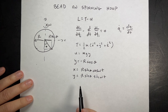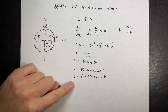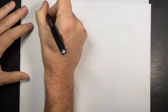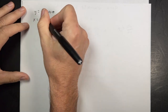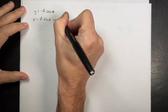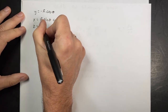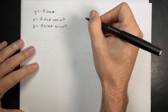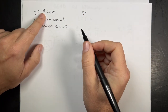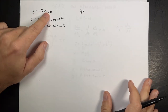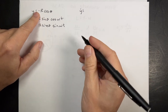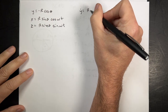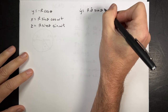Now I can take derivatives with respect to time, square them, and put them into the kinetic energy. Let me rewrite: y equals negative r cosine theta, x equals r sine theta cosine omega t, z equals r sine theta sine omega t. y_dot is the derivative of this with respect to time. R is a constant, so the derivative of cosine theta is negative sine theta, and I have to take the derivative of the inside, which is theta_dot. So y_dot equals r theta_dot sine theta.